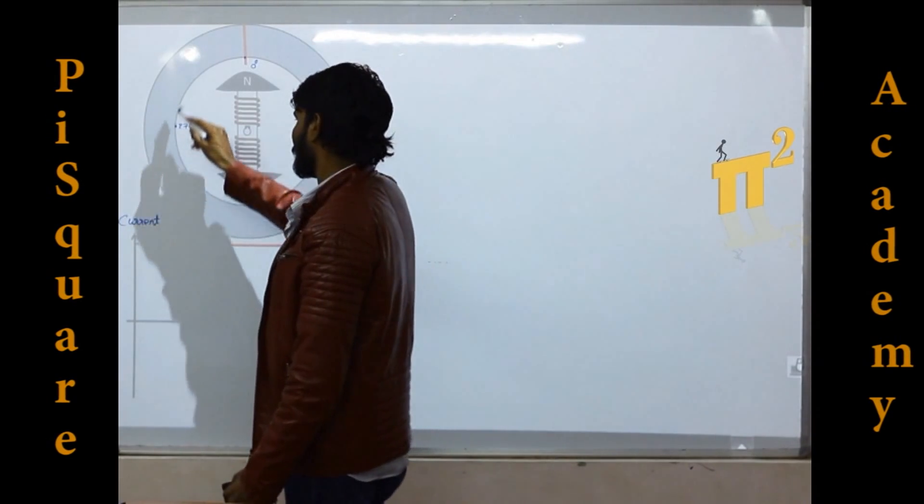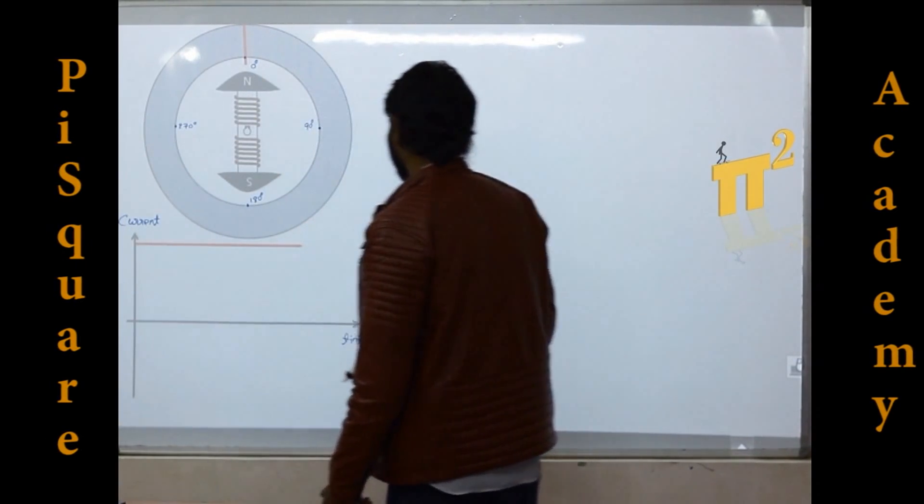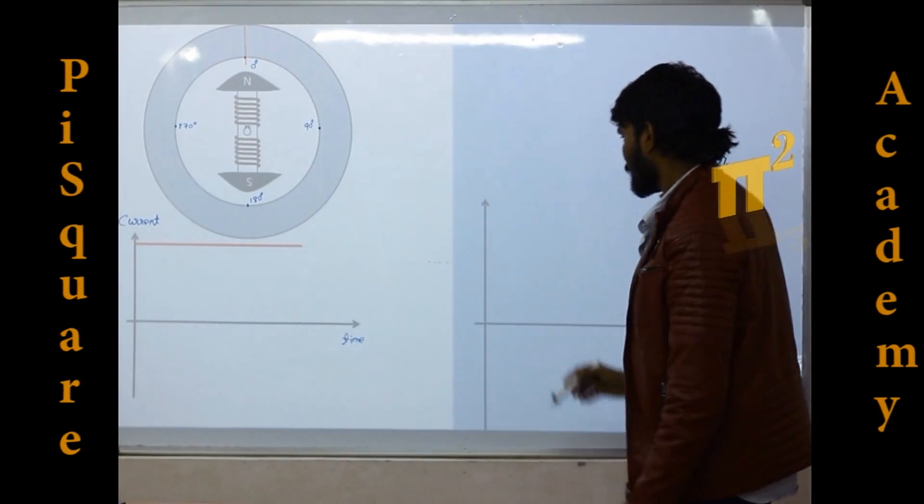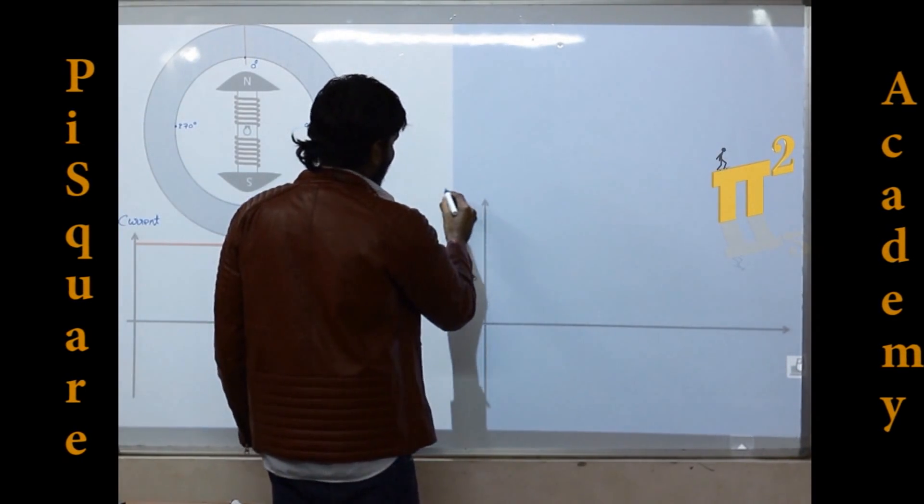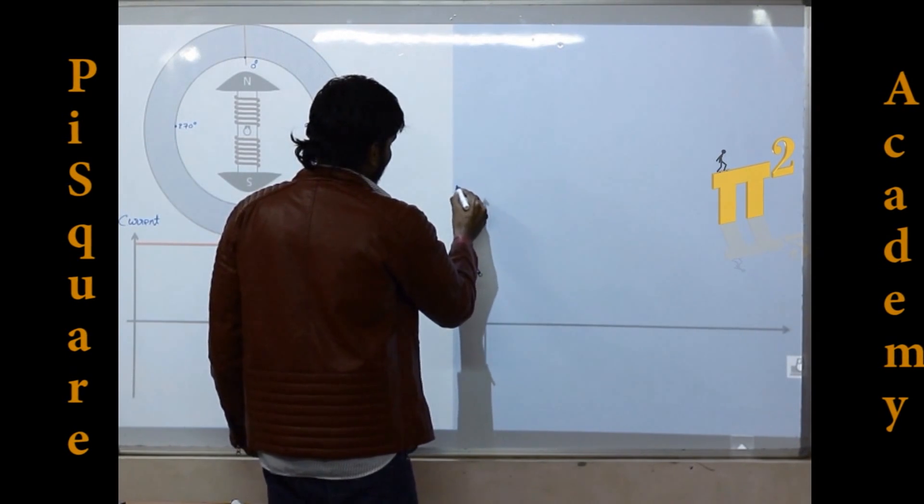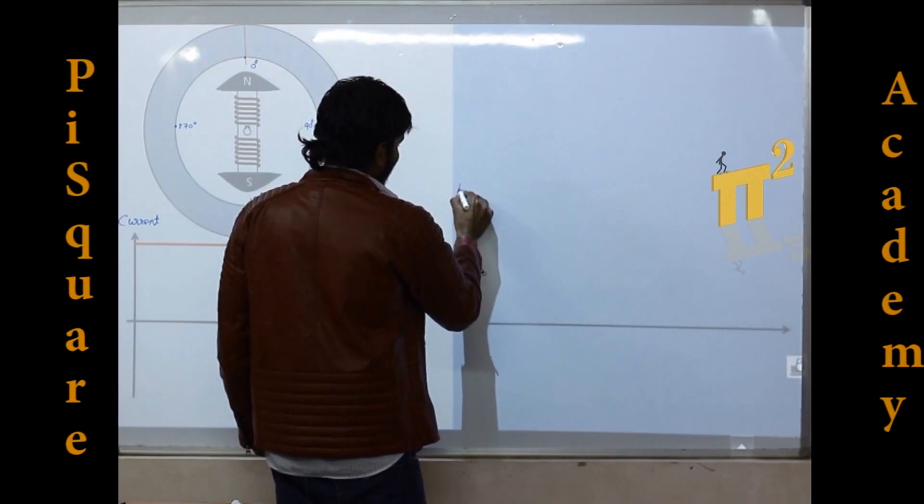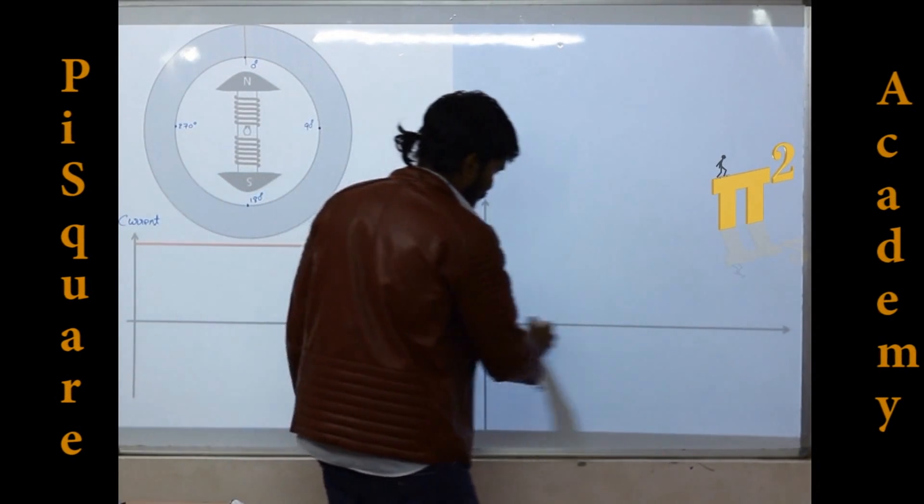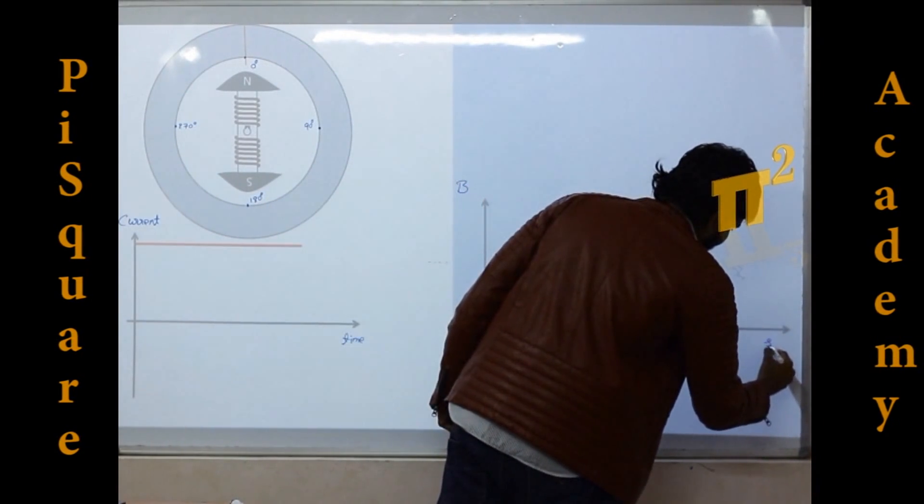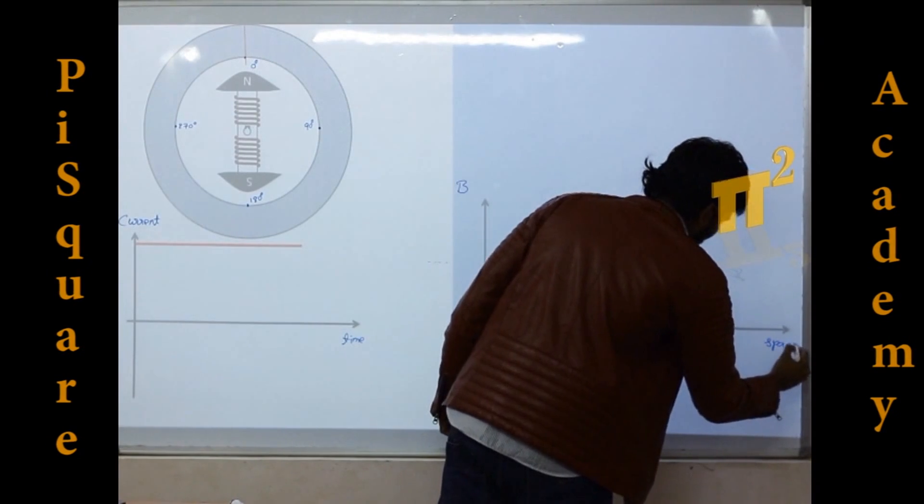We will take here this is magnitude of flux density B with respect to x-axis of space angle.